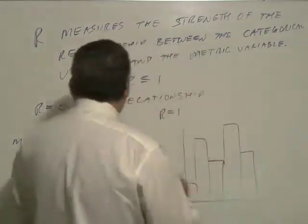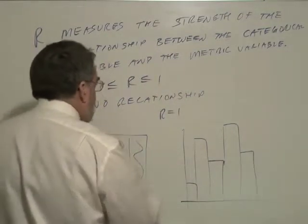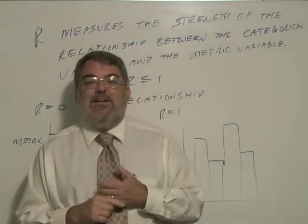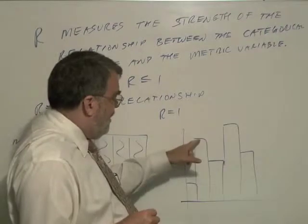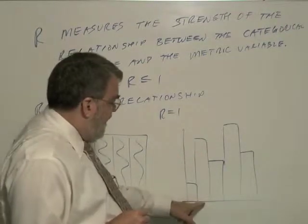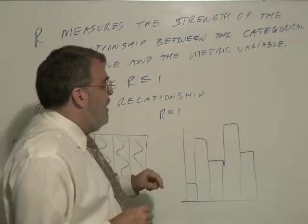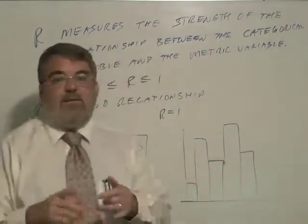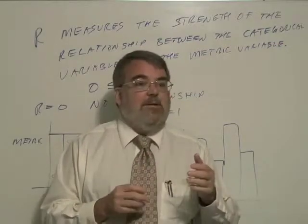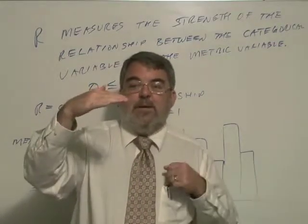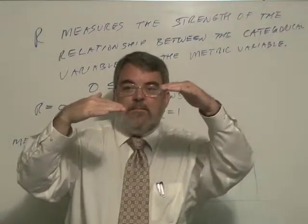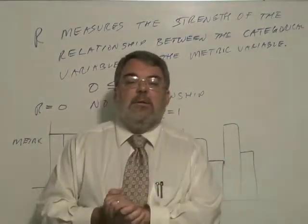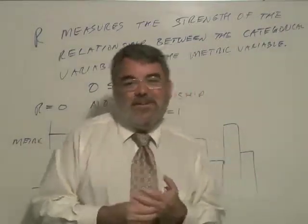It just occurred to me: when R equals 1, that means the residual sum of squares is 0. That means every observation in each category has the same score. Rather than this being just the average in that category, if each state in each region had the same crime rate — for example, if you go to the mid-Atlantic states and they all have one crime rate, and you go to the southern states and they have a different crime rate — if it's the same within each region but different among regions, then that would be R equal to 1, a perfect relationship.